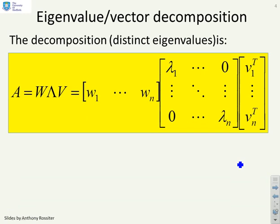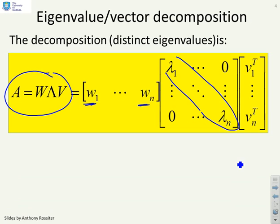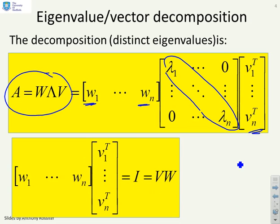A reminder of how the eigenvalue eigenvector decomposition works: you can write A equals W lambda V, where W has the eigenvectors, lambda is a diagonal matrix of eigenvalues, and V has the left eigenvectors. We know that WV or VW is the identity.